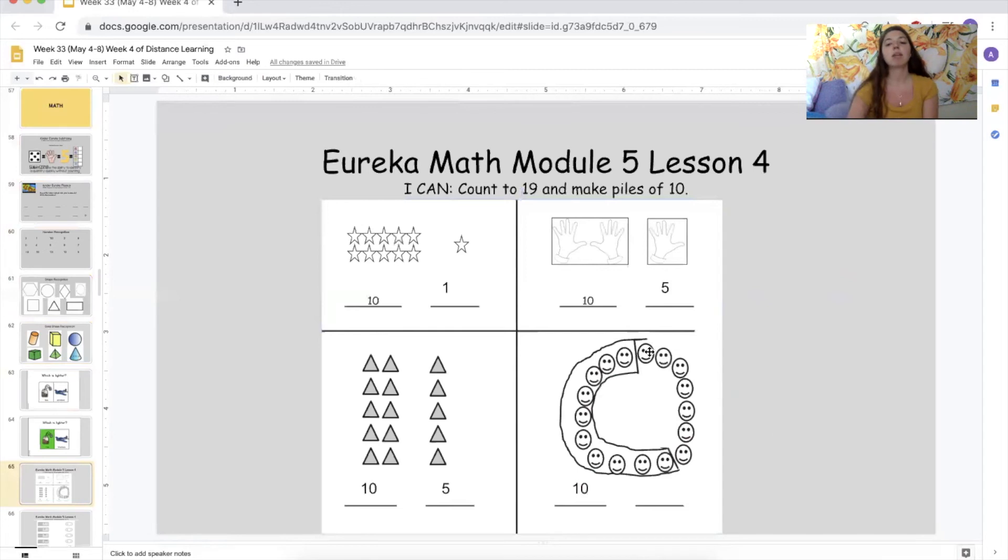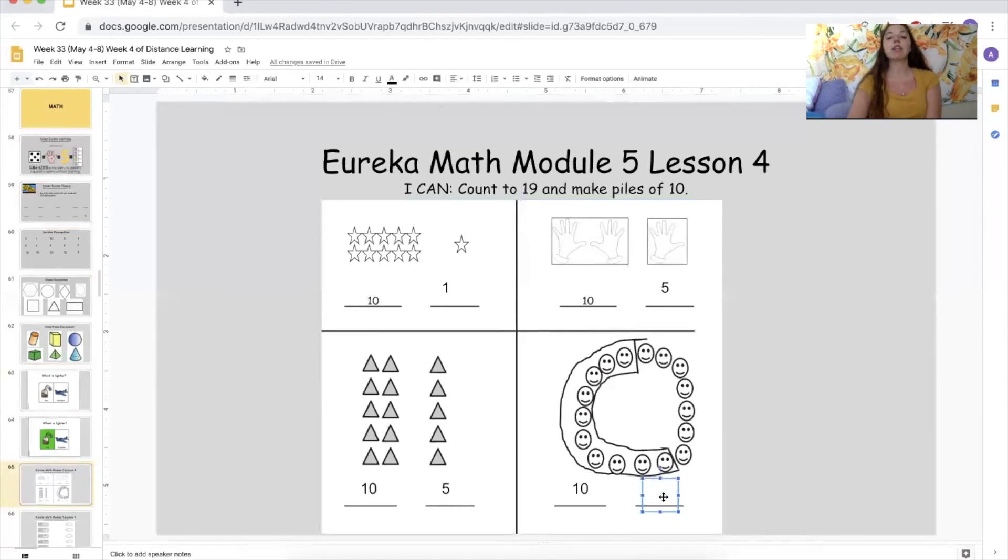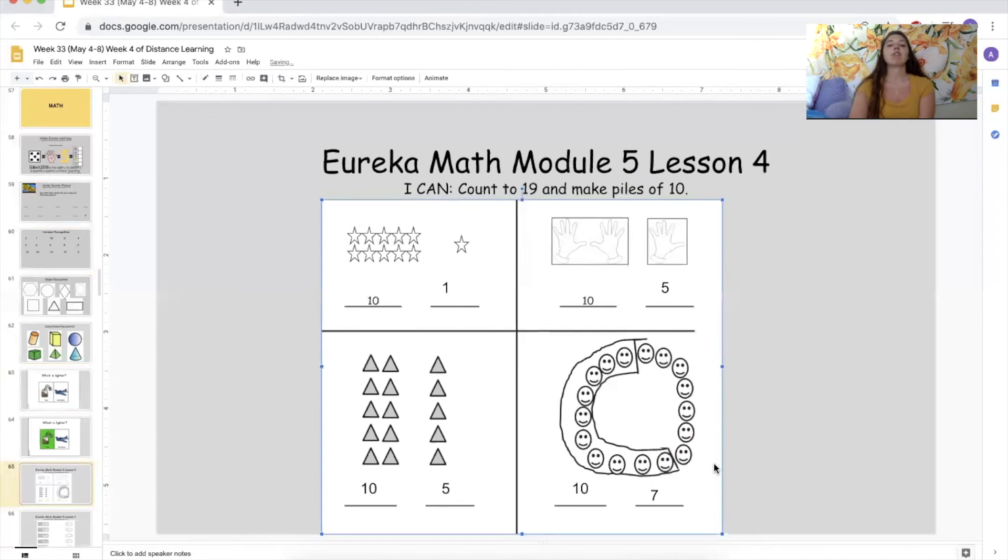10 was circled. And how many are extra? Let's count. One, two, three, four, five, six, seven. So we have a group of 10 and a group of seven. Very, very good.